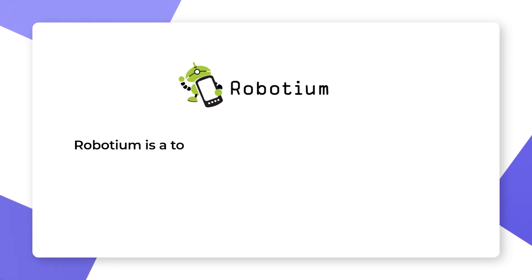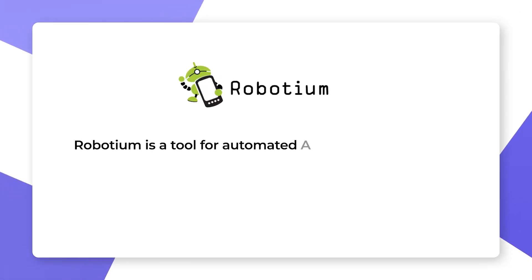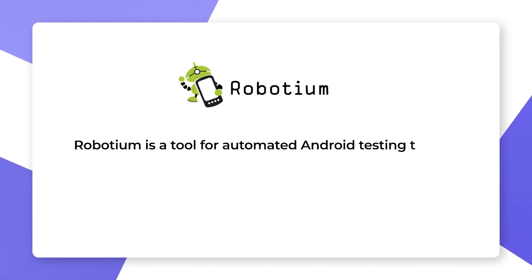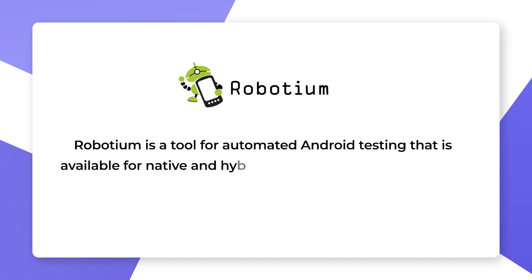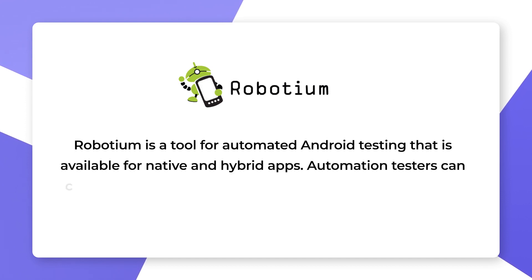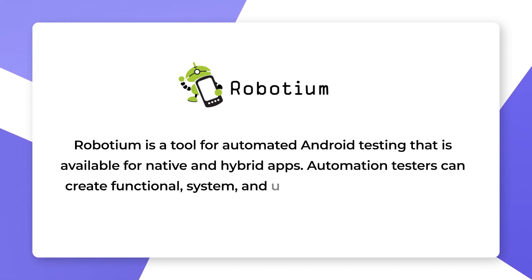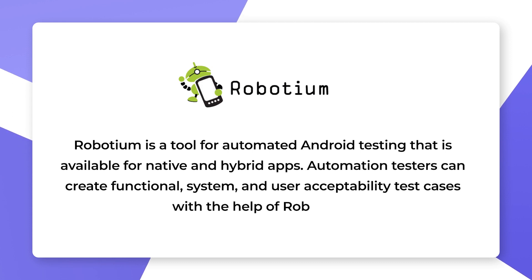Robotium is a tool for automated Android testing that is available for native and hybrid apps. Automation testers can create functional, system, and user acceptability test cases with the help of Robotium.